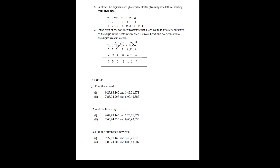Moving to tens place: 2 minus 2 is 0, so we subtract comfortably. Hundreds place: 1 minus 0 is 1, fine. Thousands place: we have 2 on top and 8 below, so we borrow 1 from the next digit. That 8 becomes 7, and the 2 becomes 12. So 12 minus 8 becomes 4. Then 7 minus 1 is 6, 7 minus 2 is 5, and 9 minus 6 is 3. This number is 35 lakhs 64,107.